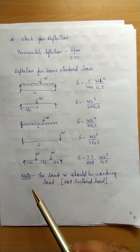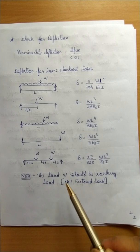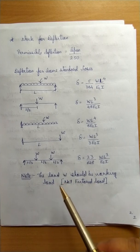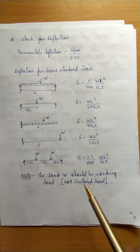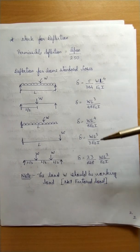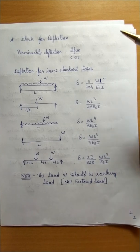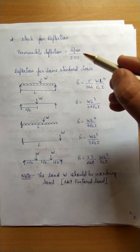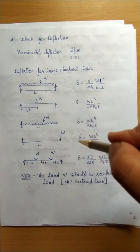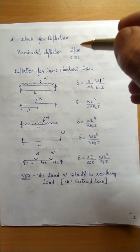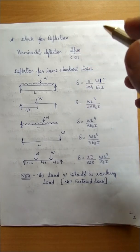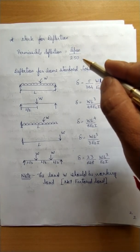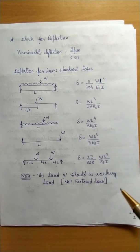The load w in the deflection formula must be the working load — that is, the unfactored load as given, not multiplied by any load factor. For the given span, calculate the allowable deflection (span/250) and calculate the actual deflection in the beam. The actual deflection must remain below the permissible limit. If it exceeds the permissible deflection, the beam fails the deflection check.